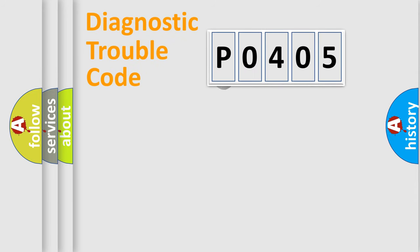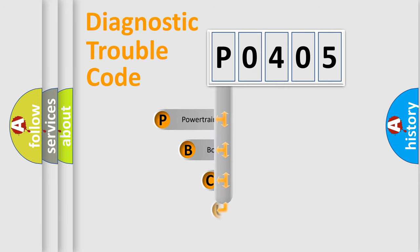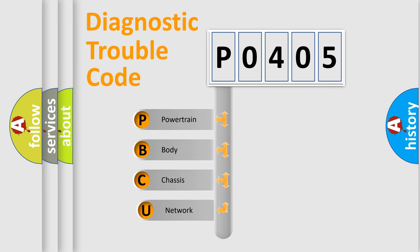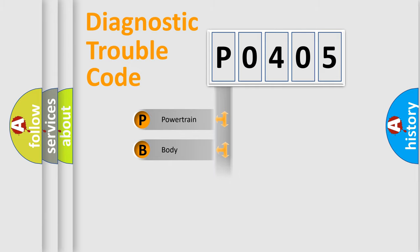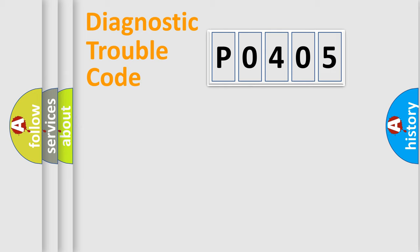Let's look at the history of diagnostic fault code composition according to the OBD2 protocol, which is unified for all automakers since 2000. We divide the electric system of an automobile into four basic units: Powertrain, Body, Chassis, and Network.